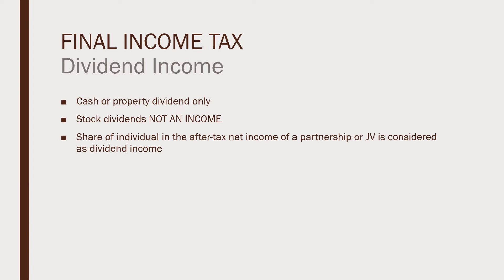The next type of income subject to final income tax is dividend income. Only cash or property dividends will be taxed because stock dividends are not considered income — consistent with how we record stock dividends in accounting with only a memorandum entry. The share of an individual in the after-tax net income of a partnership or joint venture is also considered dividend income. So if you are a partner in a partnership, what you receive from the partnership is considered a dividend and you apply the rules on final tax.